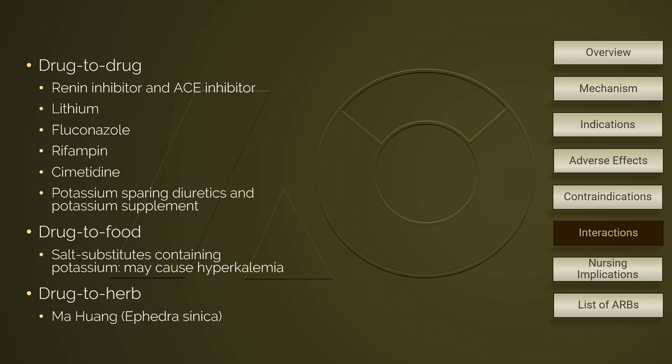The major drug-to-food interaction with ARBs is salt substitutes containing potassium, which puts the client at increasing risk for hyperkalemia. Mahuang (Ephedra sinica) is a Chinese herb often seen in formulas for treating asthma and common cold, and is also commonly used for weight loss. Ephedra sinica can induce perspiration and increase heart rate and blood pressure; therefore, it can decrease the antihypertensive effect of ARBs.